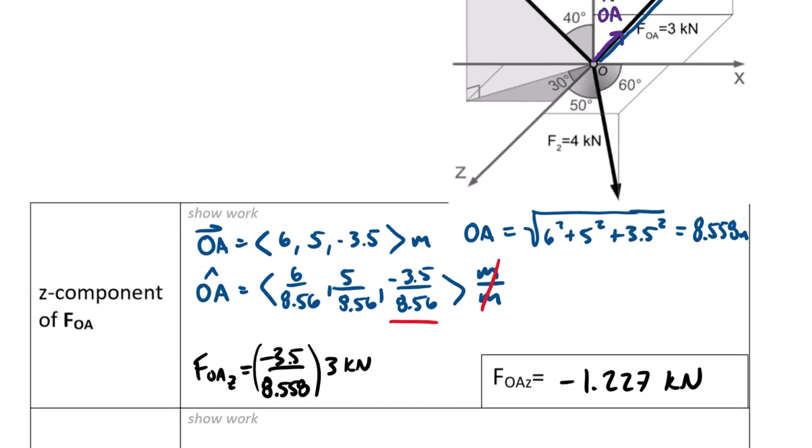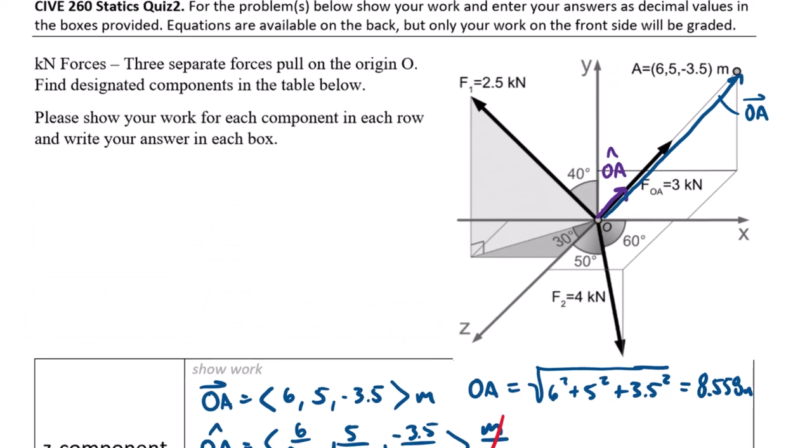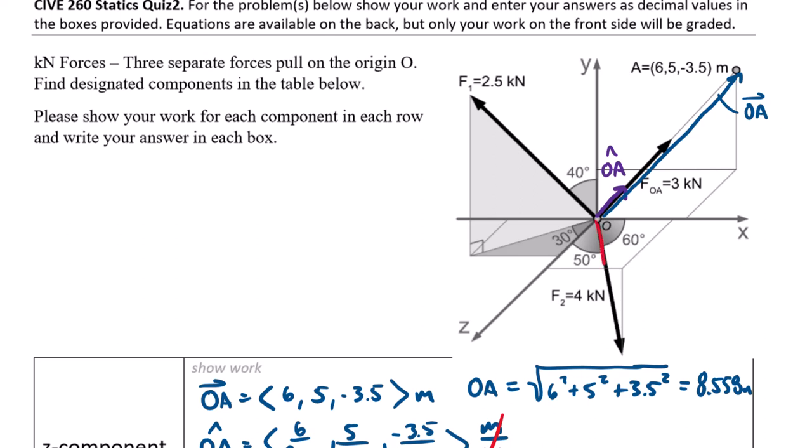The next force is the x-component of F2, this vector coming down here. A couple things to notice: it's going to have a negative y component, down below this xz plane. If you take a look at the two angles, 50 and 60, there should be a huge red flag when you say 50 plus 60 is like 110, but there's only 90 degrees in any of these orthogonal planes, so these are not planar angles.